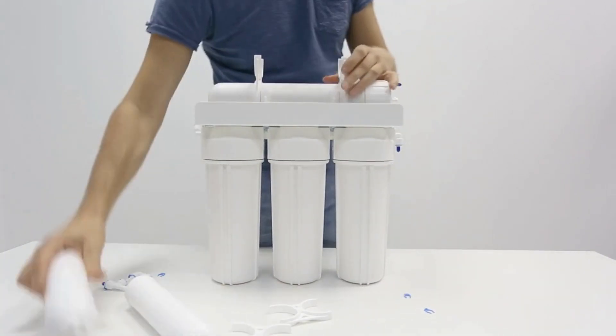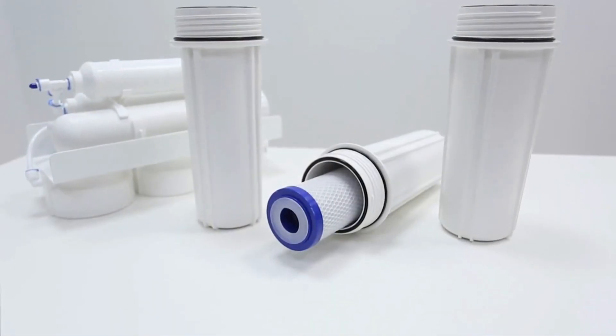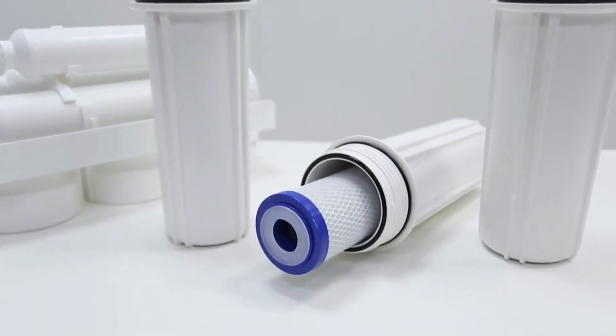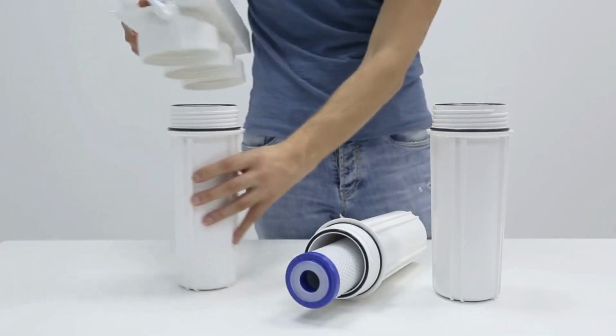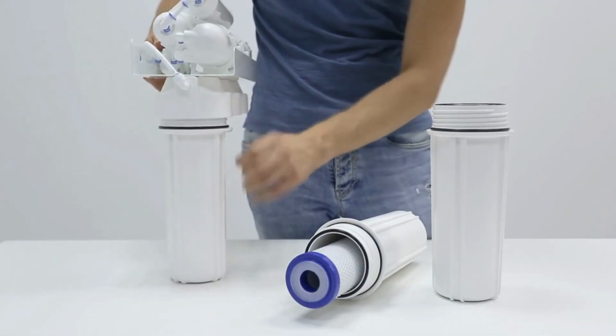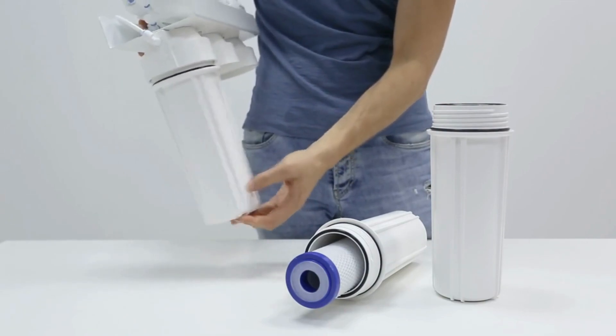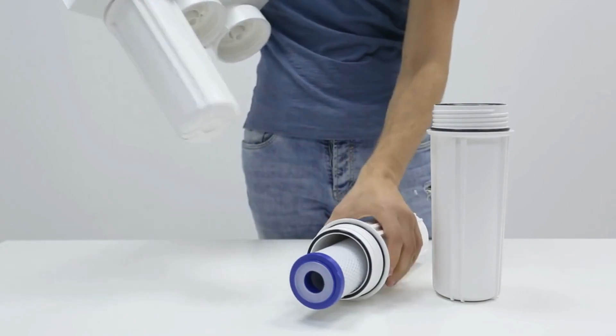If your RO system has an integrated manual flush valve on the drain line, the process becomes much easier. Simply align the ball valve with the waste line to activate the flushing mode. Let the system run for about half an hour to complete the flush, and then close the ball valve.